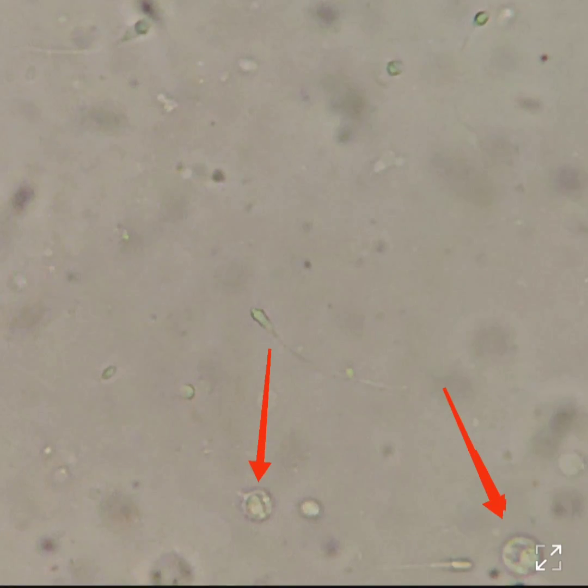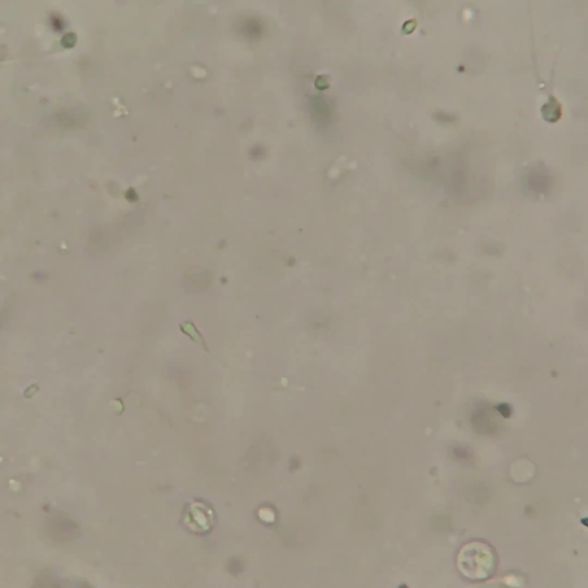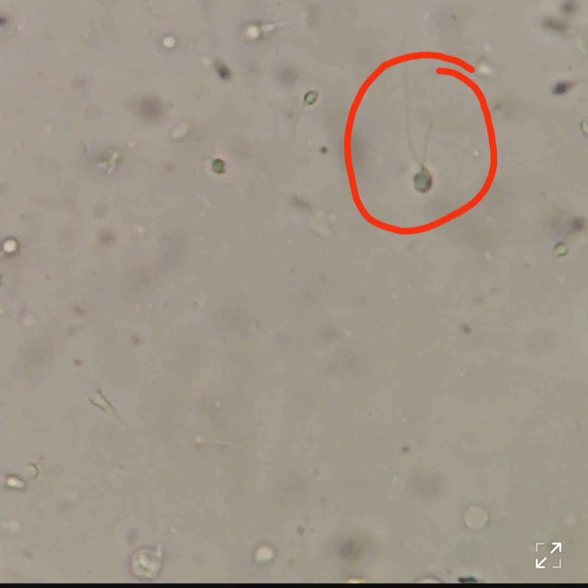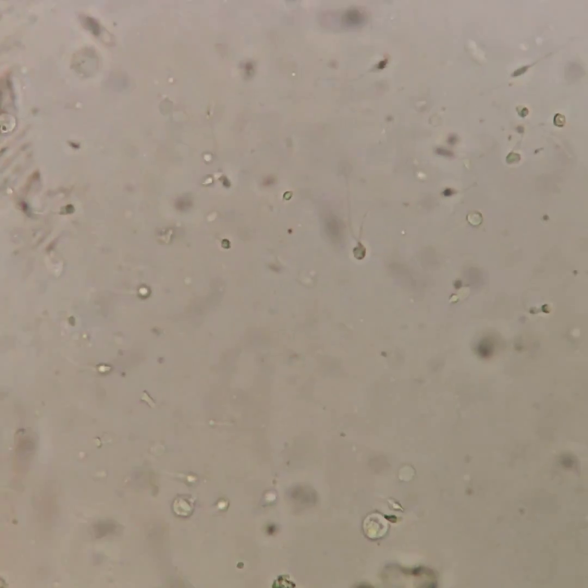You can see these cells. Don't be confused by these cells. These are not pus cells. These are spermatogenic cells which are shown by arrows. And this is the giant headed double tailed sperm.